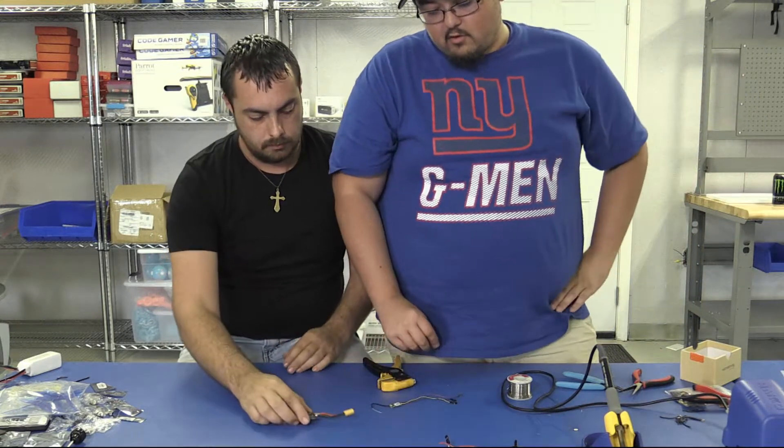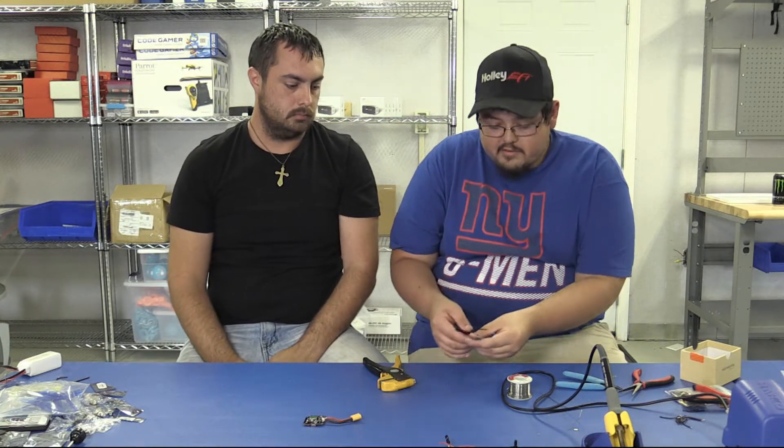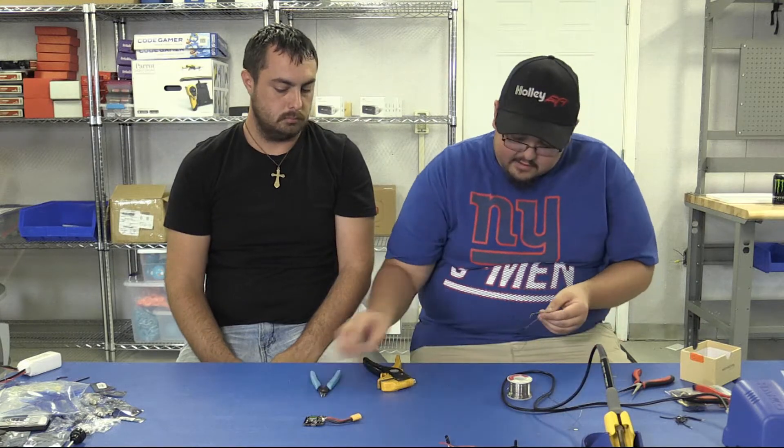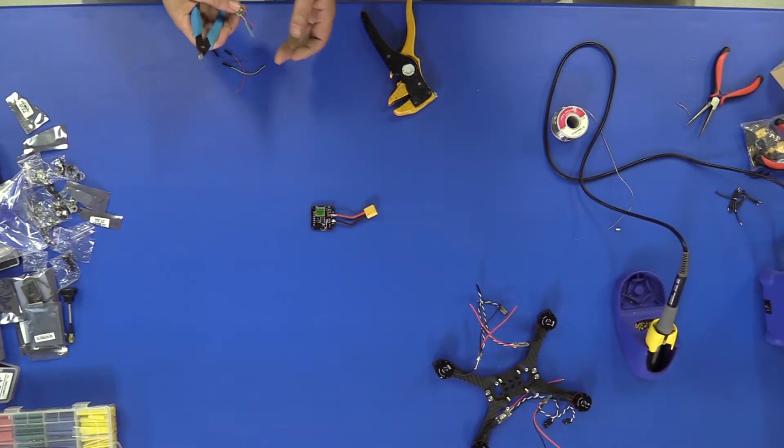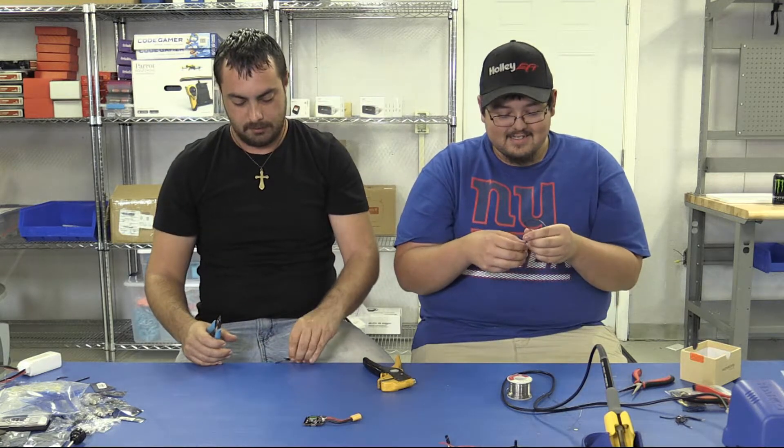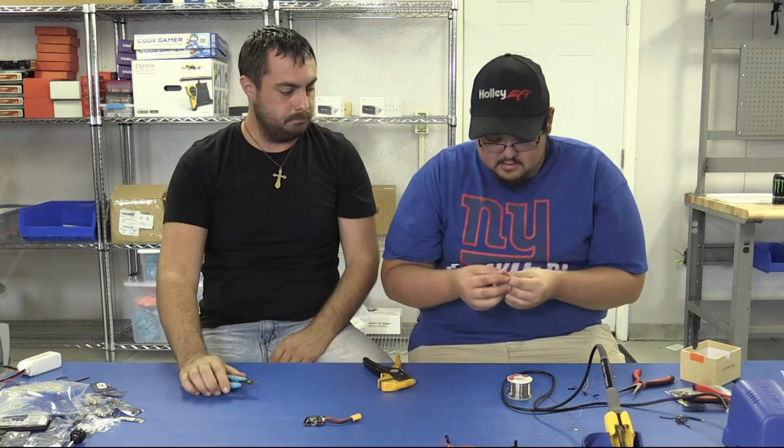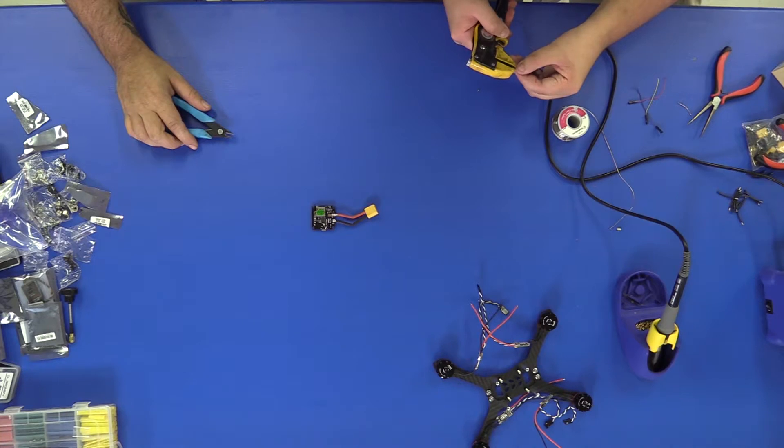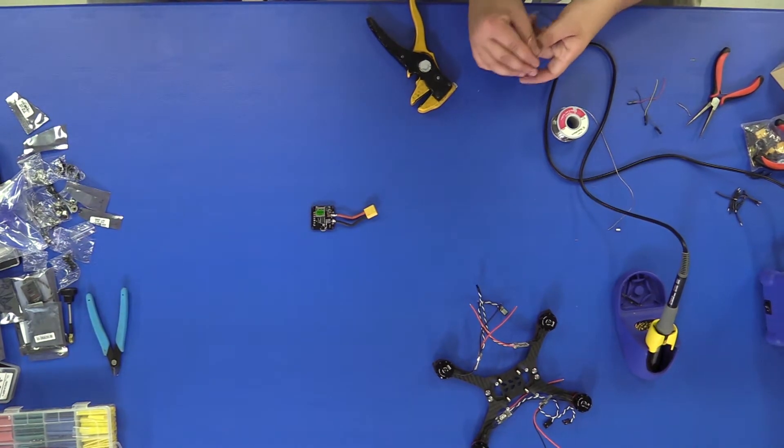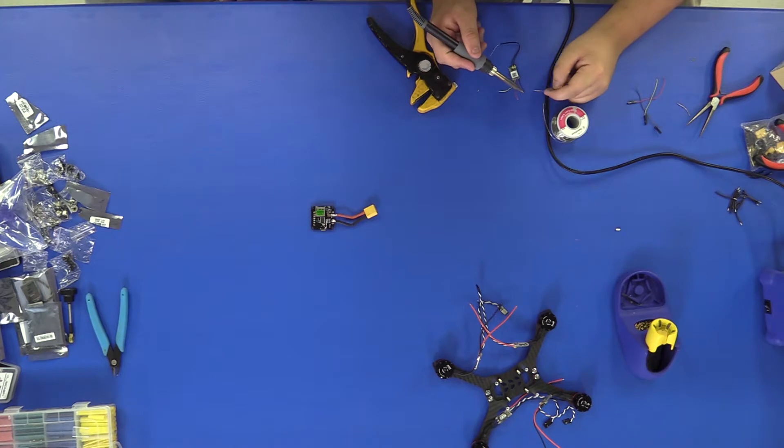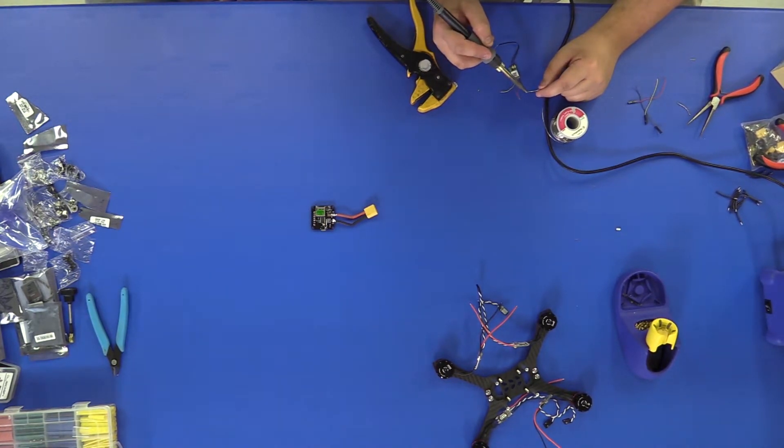Next step is going to be to solder the receiver onto the board. About two inches is optimal. Okay, so next you're going to strip this end of the wire. Now these will be tinned because they're going on pads instead of in holes. Soldering iron on the end of the wire, solder on the side. That will allow the solder to be drawn into the wire throughout the entire length of the exposed wire.